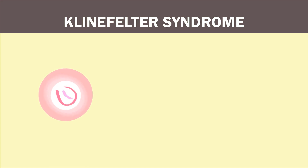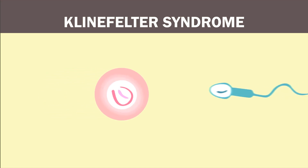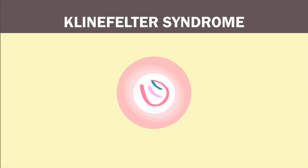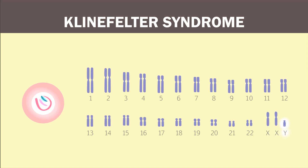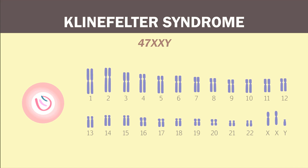There is also Klinefelter syndrome. It is another common sex chromosome aneuploidy, but in the reverse of Turner syndrome — instead of non-disjunction resulting in one gamete with no sex chromosomes, in Klinefelter syndrome one gamete has two sex chromosomes. This joins with another normal gamete to form a zygote with a total of 47 chromosomes, including two copies of an X chromosome and one copy of the Y chromosome. This is denoted as 47XXY.